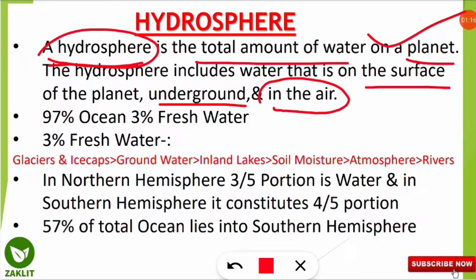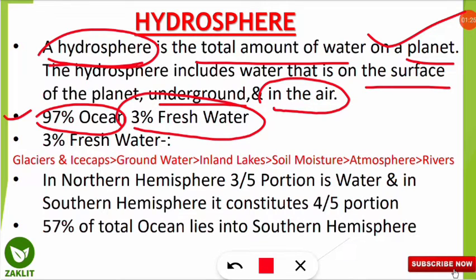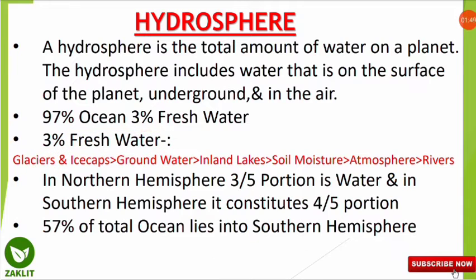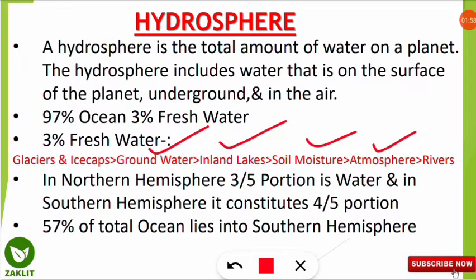Around 97% of water is concentrated in the oceans, and only 3% is available as freshwater. Among that 3% freshwater, maximum is concentrated in glaciers and ice caps. After that, freshwater is present in the form of groundwater, followed by inland lakes, soil moisture, atmosphere, and rivers.